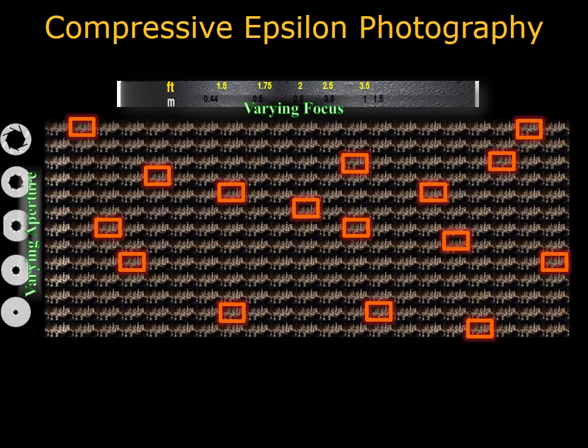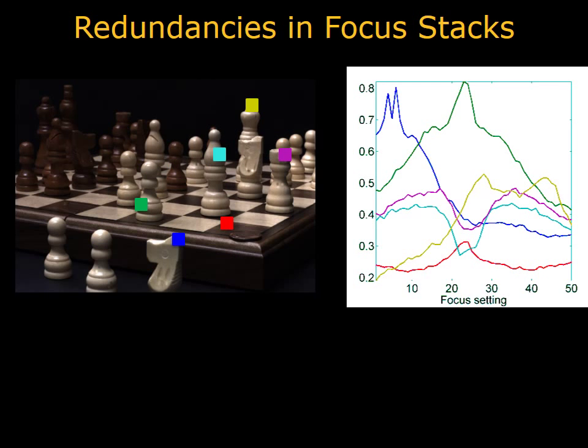This means that the user can arbitrarily change the aperture and focus settings after taking this subset of images. To understand why, consider how the intensity at a pixel changes with respect to where the camera is focused. This is shown for a subset of pixels on the right. Note the structure — peaks or valleys appear in these profiles when their respective pixels come into focus.